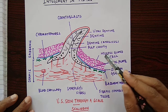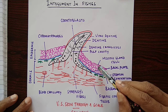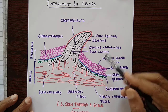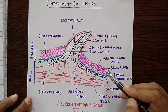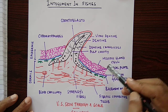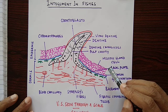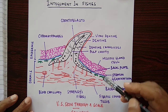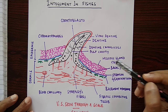Mucus gland cells, also called goblet cells, secrete mucus. This mucus is present on the entire surface of the body and reduces friction with the water as the fish moves through it.